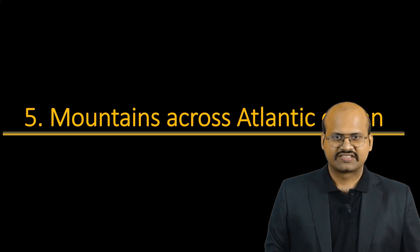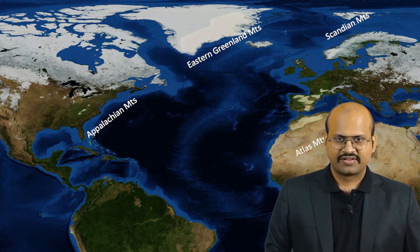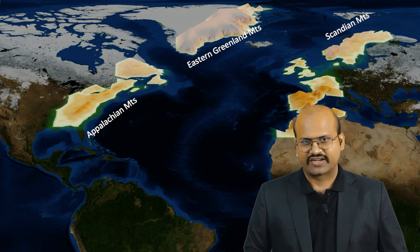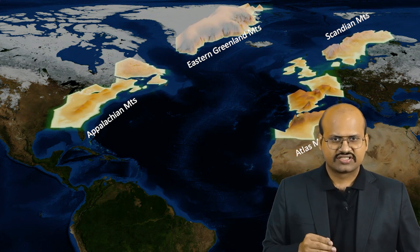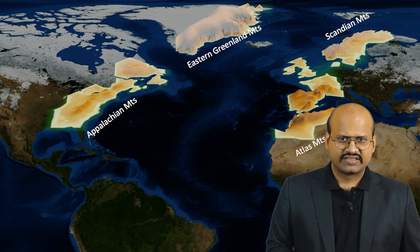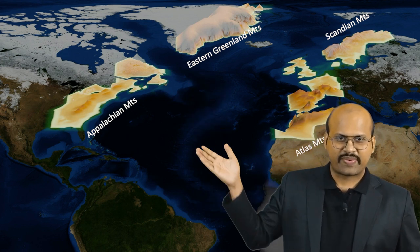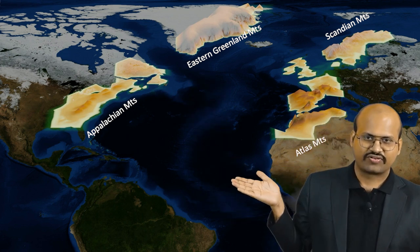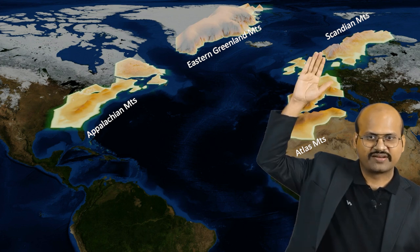The next evidence is similarity of mountains across the Atlantic Ocean. Mountains on both sides of the Atlantic show great similarities in their origin, structure of rocks, and time period. These mountains include the Appalachian Mountains of the US, the Eastern Greenland Mountains, parts of the Atlas Mountains, Western European Mountains and Scandinavian Mountains.